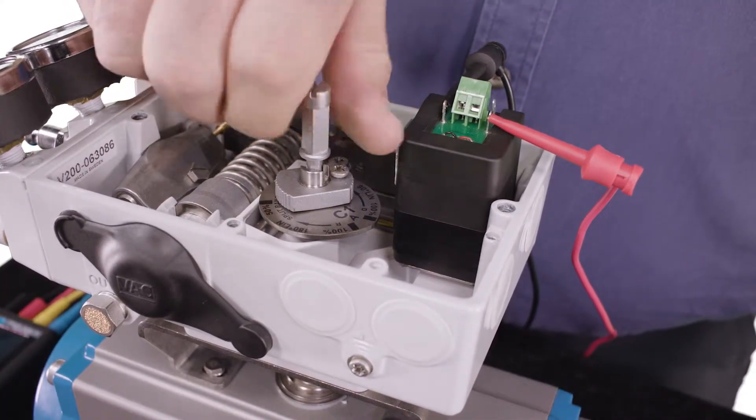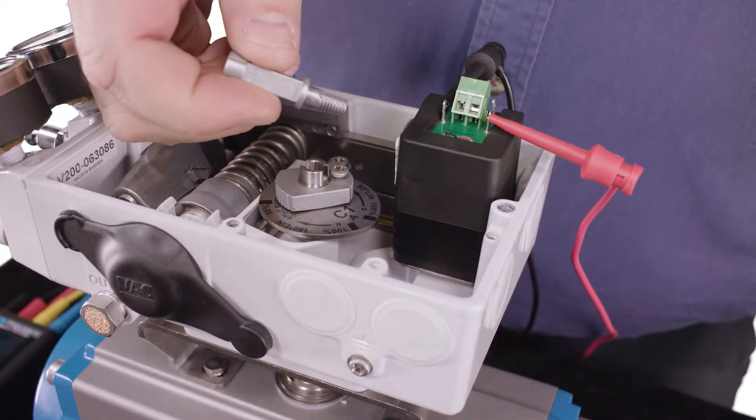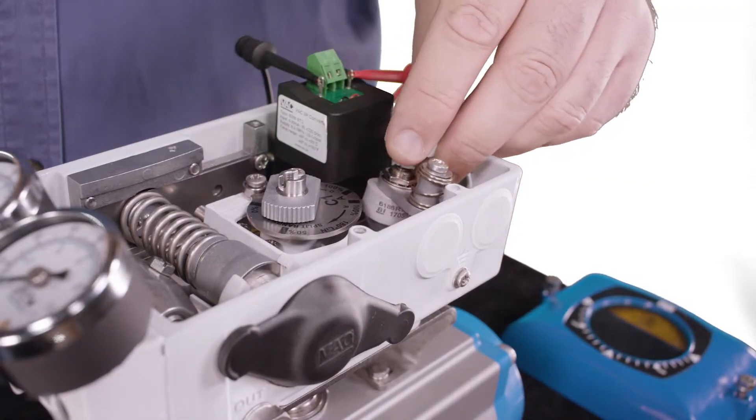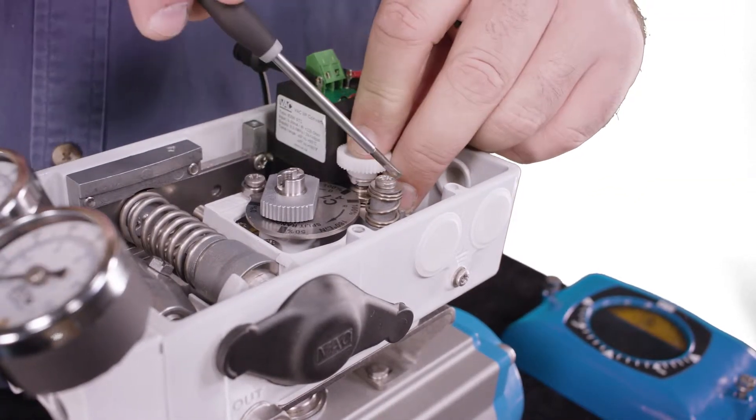Start the installation by removing this indicator post. Then, install the potentiometer by threading the mounting screw into the bottom of the housing.